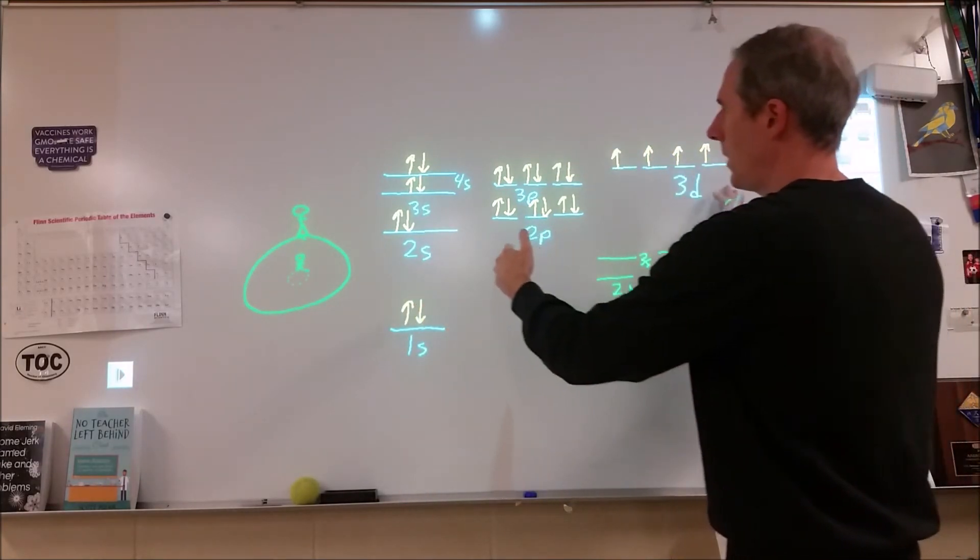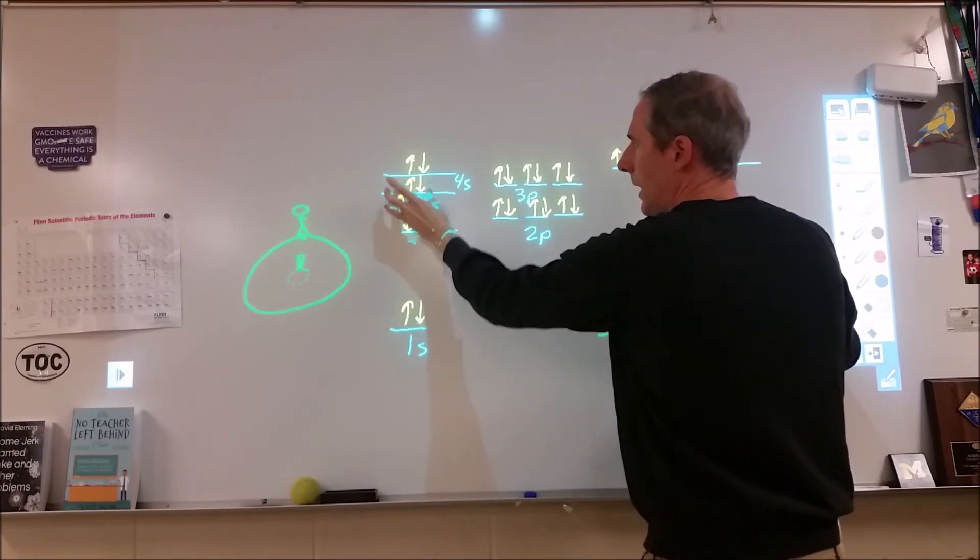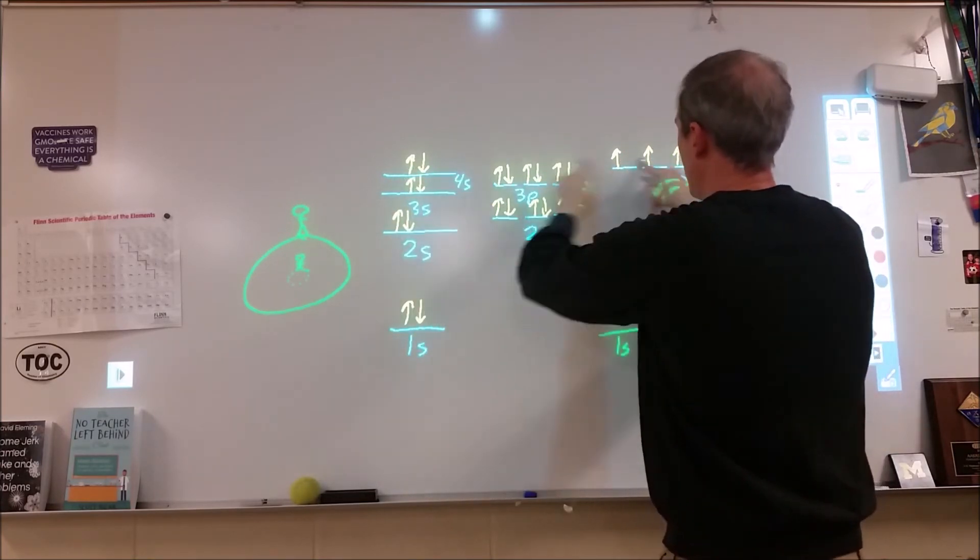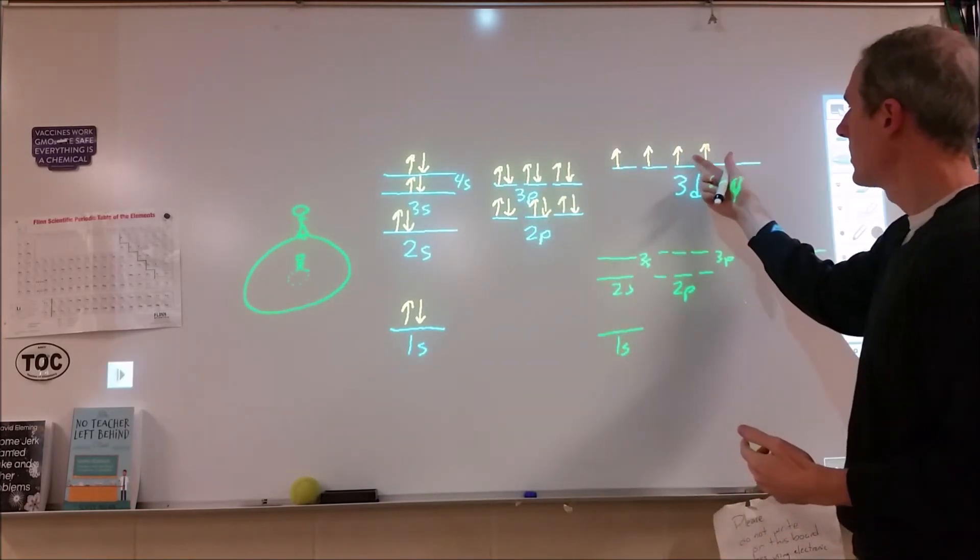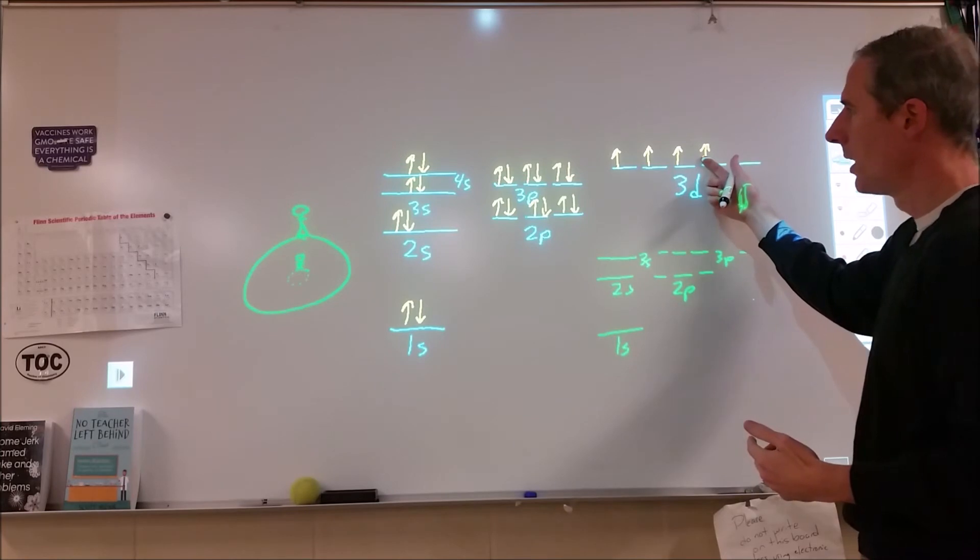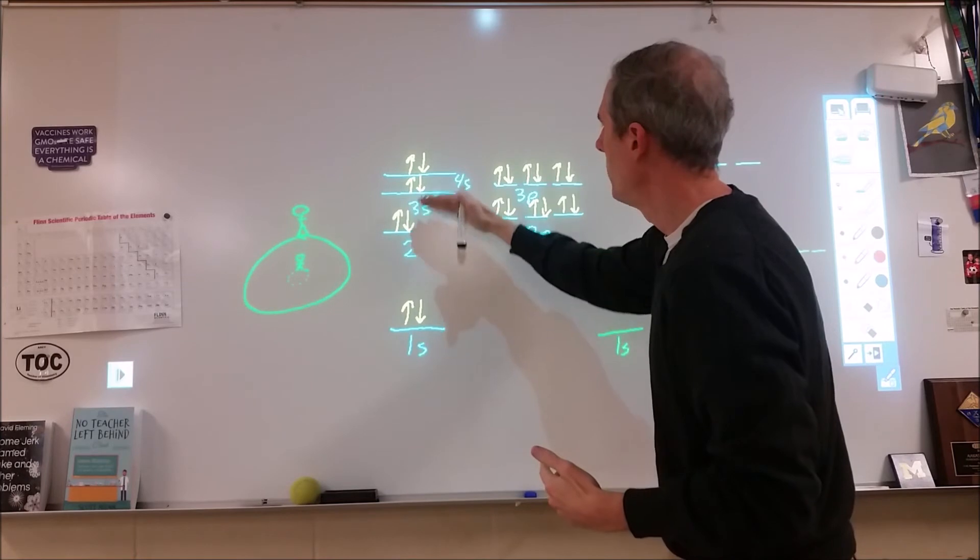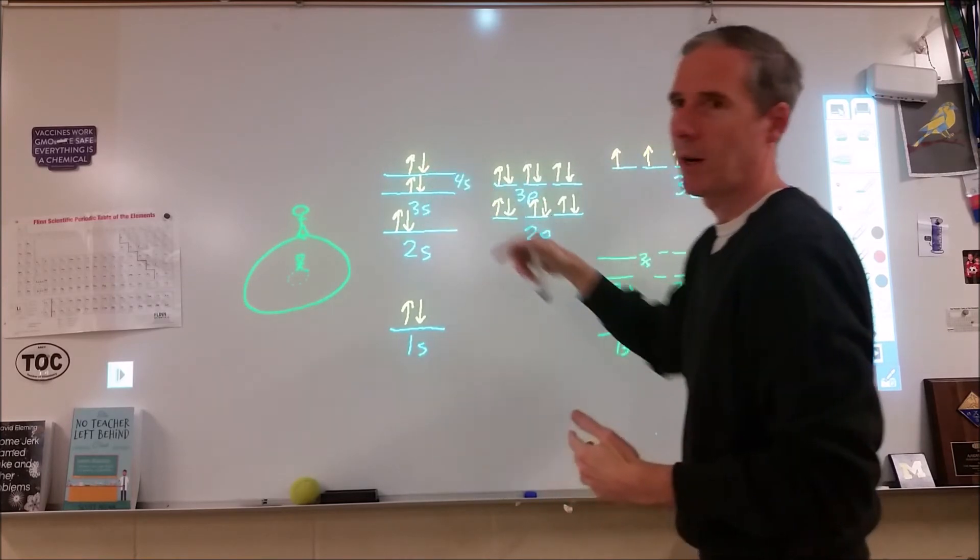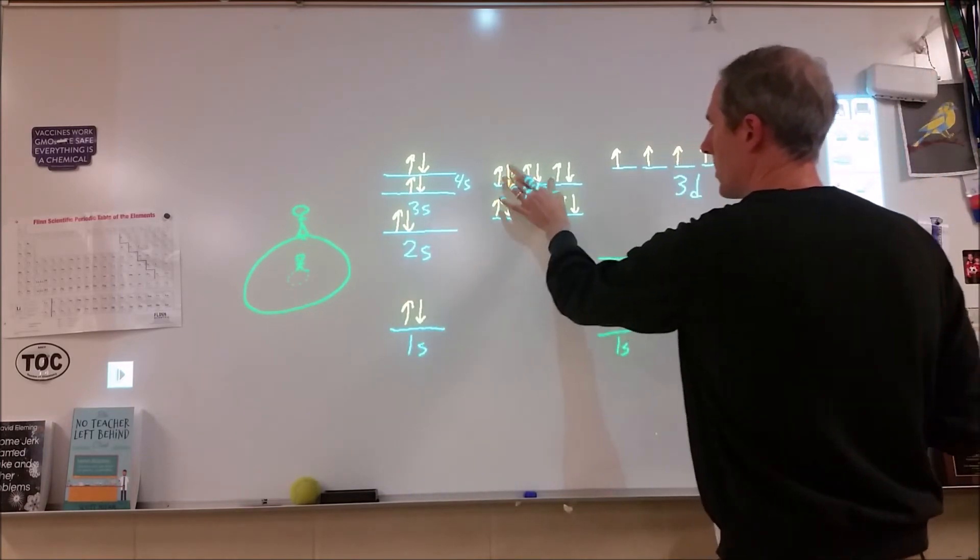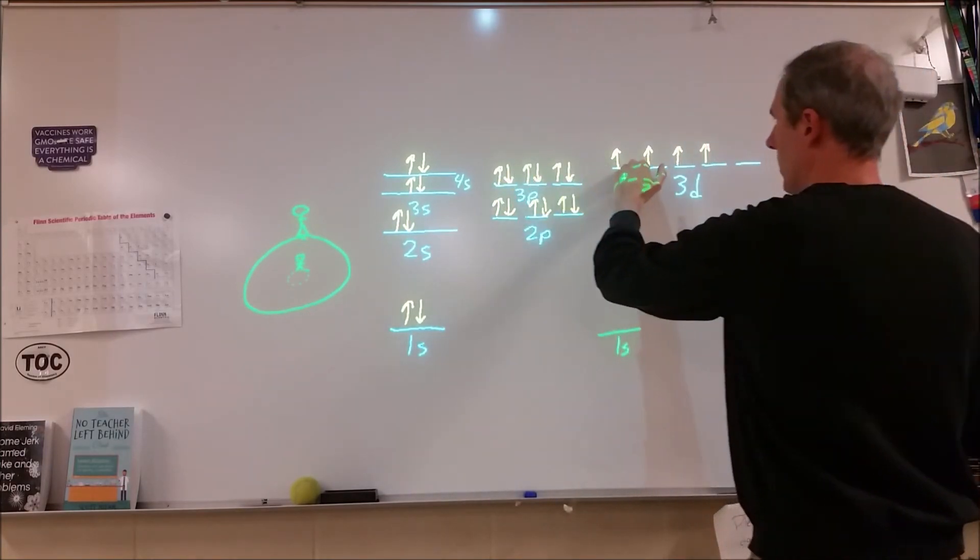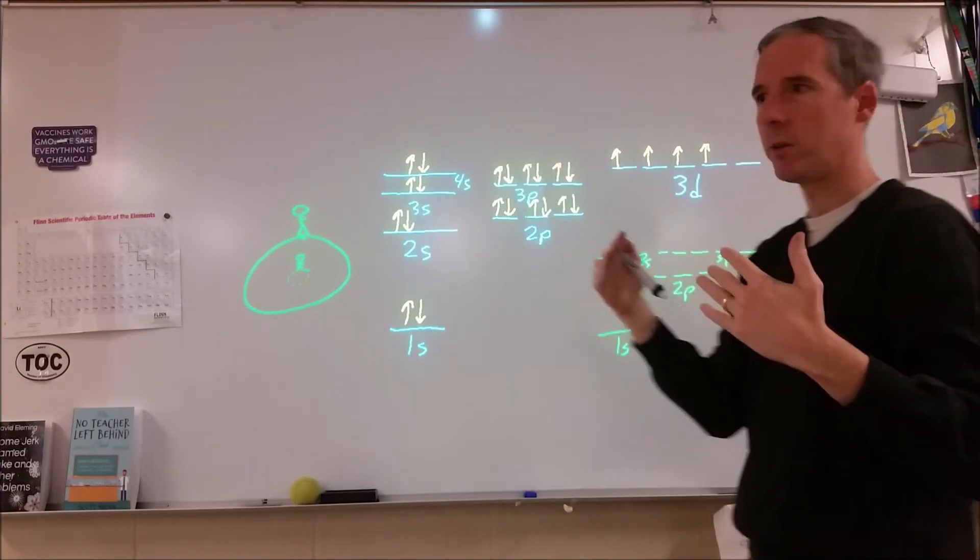So likewise, when we're looking at electrons here, these electrons are going to be repelled a lot by these ones, but these electrons are not going to be repelled very much by each other. So it turns out that what happens is because these 3d electrons don't have any radial nodes, they're repelled more by these than these two are. And that's why we see this shift up.